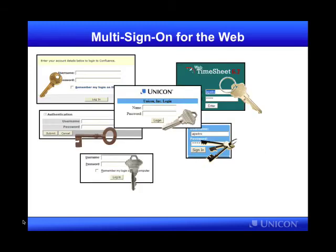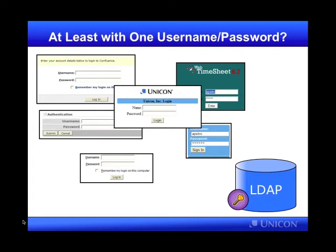To get at what single sign-on is, I'd like to talk about multi-sign-on. Multi-sign-on is when you have different applications that each present their own login forms, and perhaps they all use their very own credentials — different usernames and passwords for all these different applications. You can improve this by having one store for credentials, one authoritative username and password for each of the users on your campus.